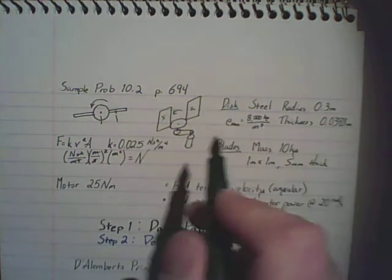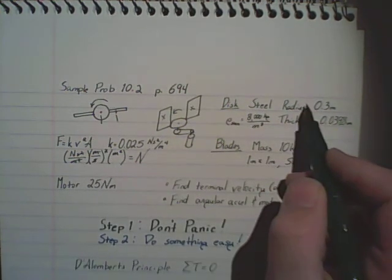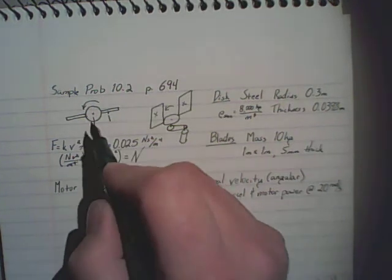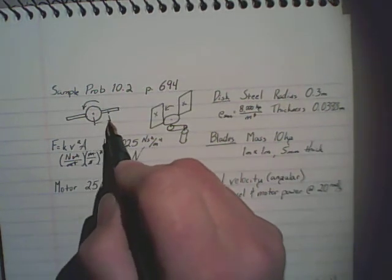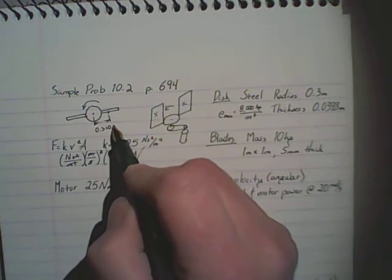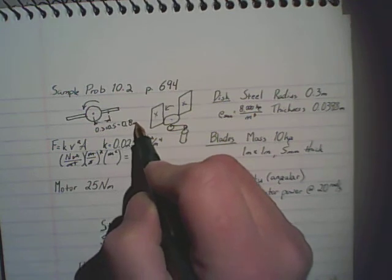Just go ahead and figure this out, start figuring it out. We know that the disk itself has a radius of 0.3 meters, and we know that each of these blades is 1 meter square. So the distance from the center of rotation to the center of the disk is 0.3 plus 0.5 meters, or a total of 0.8 meters.